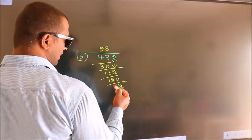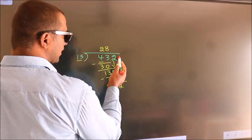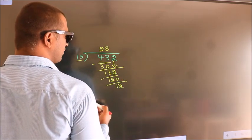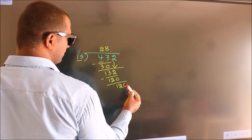After this, no more numbers to bring down. So what we do is we put a dot and take 0.